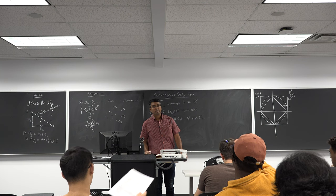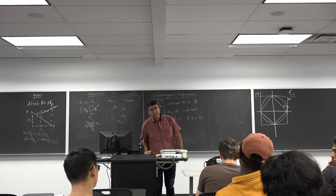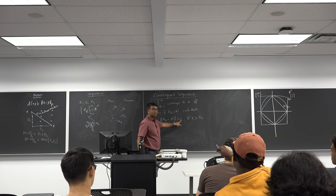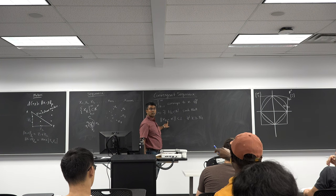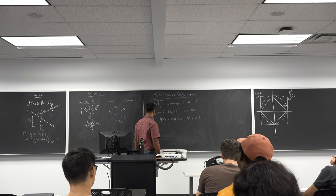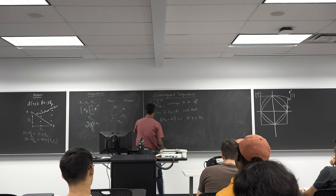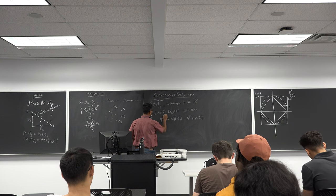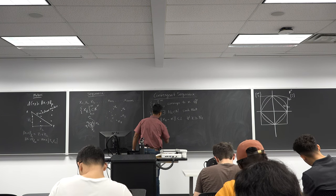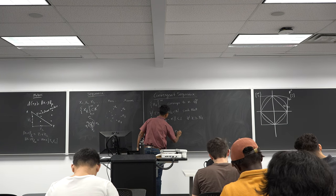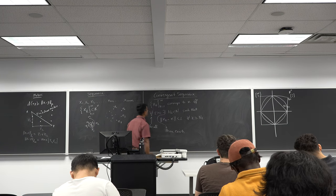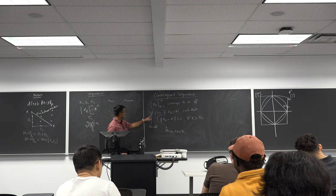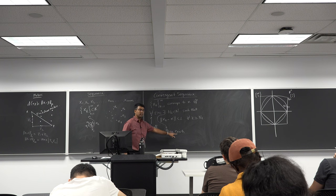A student asked about the mathematical symbols used: the upside-down A symbol (∀) means 'for all', and the backward E symbol (∃) means 'there exists'. These are standard logic symbols used in mathematical definitions.